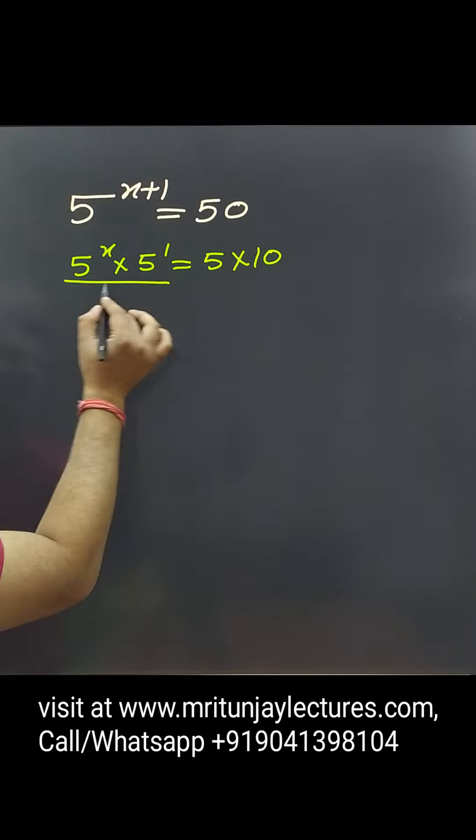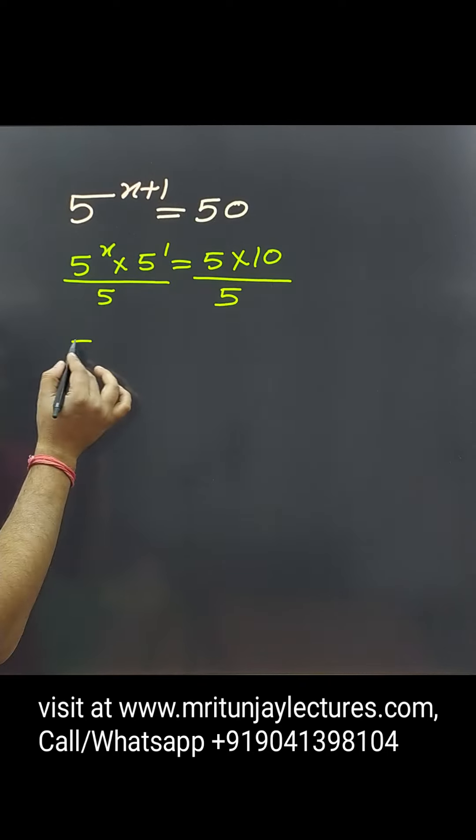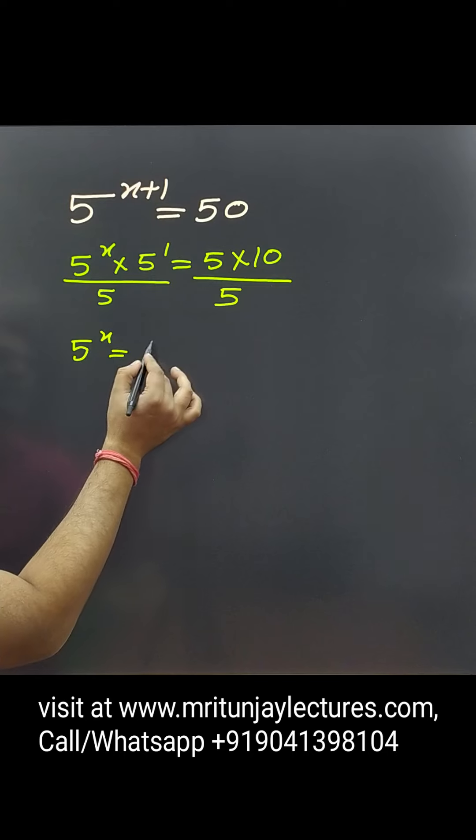Now, if we divide by 5 to power 1 on both sides, then we get 5 to power x equal to 10.